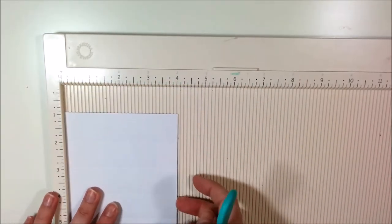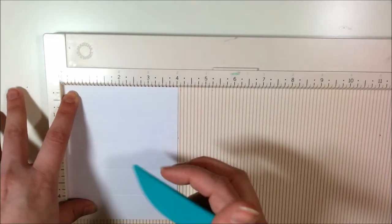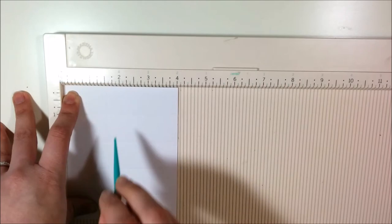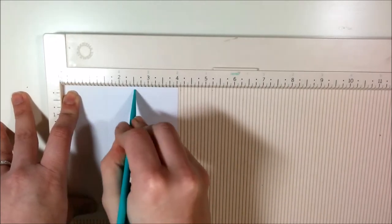Then rotate your paper by 90 degrees. And score again at 1 and a half inches and 2 and a half inches.